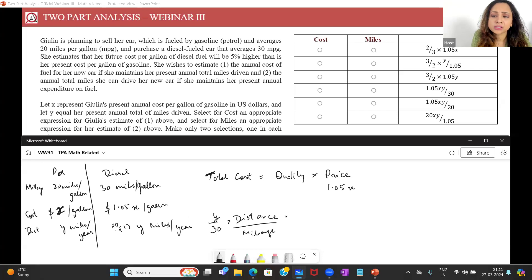If you're not sure of this, think about this: my distance driven is miles per year, annual. My mileage is miles per gallon. What happens when I divide y by 30, distance by mileage? My miles gets cancelled. I get gallons per year. This tells me that my total quantity of fuel used is y by 30. This will help you figure out why it is not 30 by y. Miles per gallon, let's say if I have 30 by y, that will be miles per gallon.